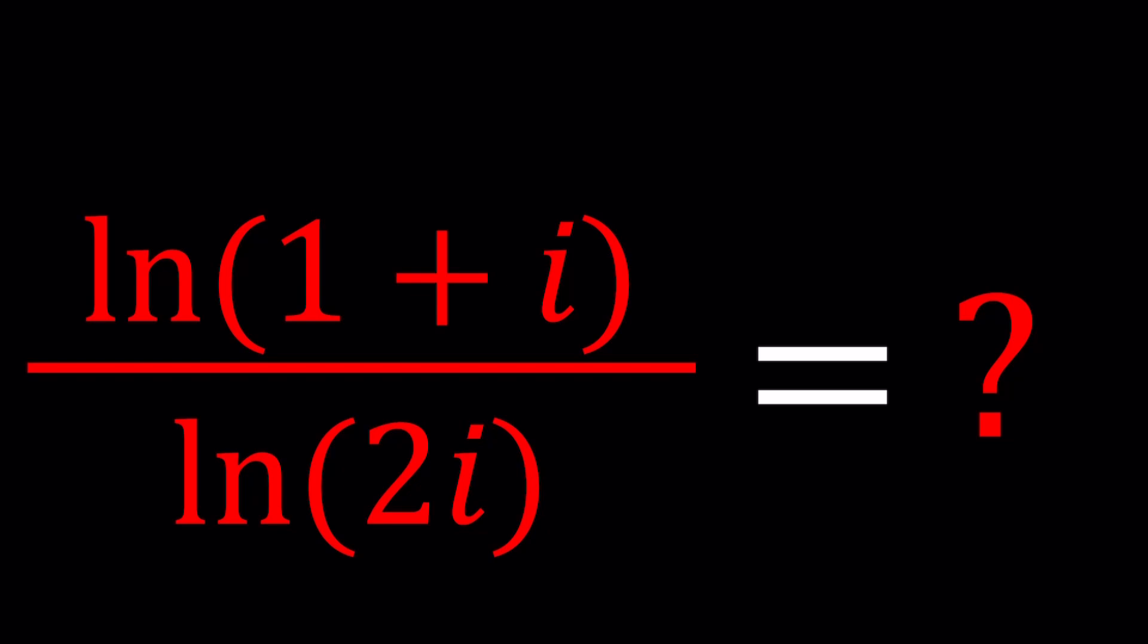We have ln of 1 plus i, which is a complex number, divided by the ln of another complex number, 2i. And I'll be presenting maybe two approaches. Let's start with the main solution, because the second one is not really a second solution, but you'll see.